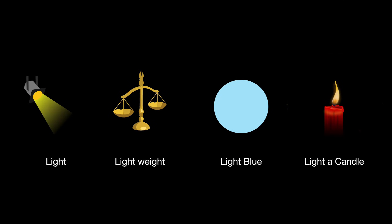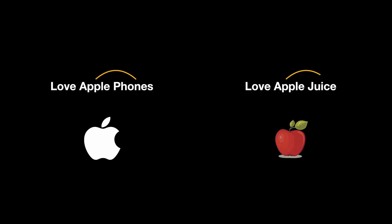In the previous video we saw that language is complex. The same word in English can mean differently in different contexts. When I say 'light', you probably think of the visible spectrum of electromagnetic waves. But when I say 'light weight', the context completely shifts to the measure of weight. When I say 'light blue', I'm talking about the shade of blue. And when I say 'lighter candle', it means I'm using light as a verb. Similarly, apple can mean differently in different contexts — apple with phones means the technology company, apple with juice means the fruit.